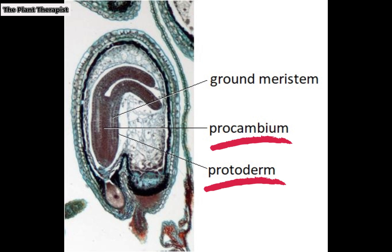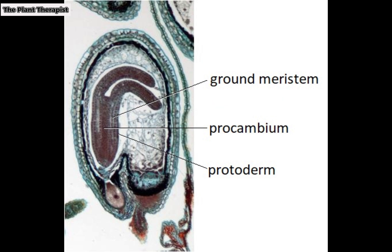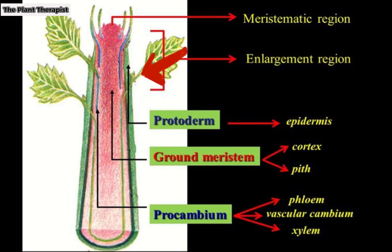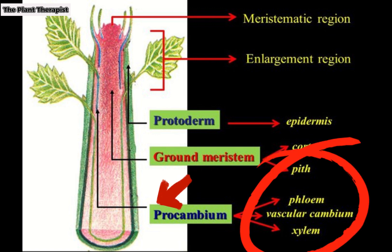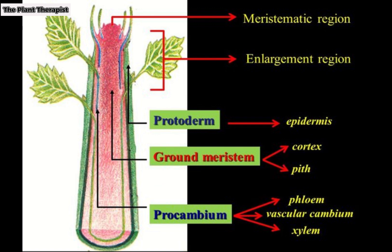These three primary meristems are the protoderm, the procambium, and the ground meristem. The protoderm gives rise to the epidermis. The procambium, which is a cylinder of strands appearing to the interior of the protoderm, produces water-conducting primary xylem cells and primary phloem cells that have several functions including the conduction of food.